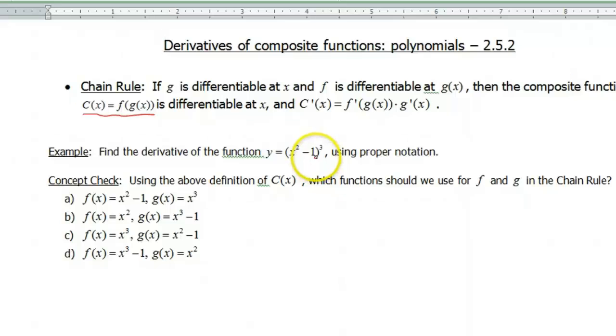So our concept check here, I want you to pause the video and think about this. Using the above definition of C(x), that means that the outside function's f and the inside function's g. So g is being composed into f. Which function should we use for f and g in the chain rule?